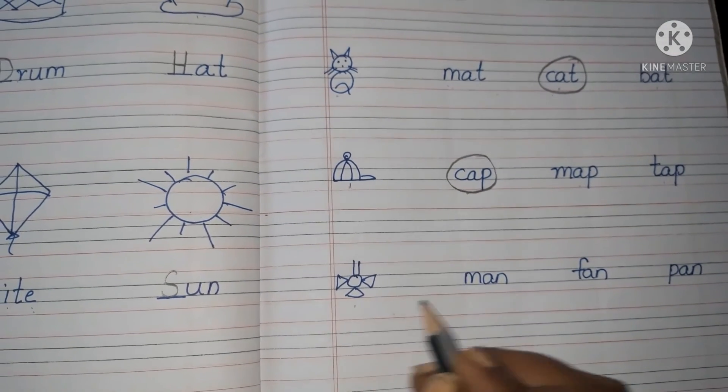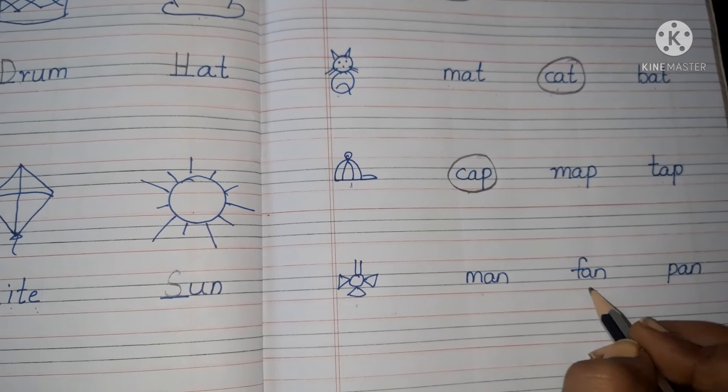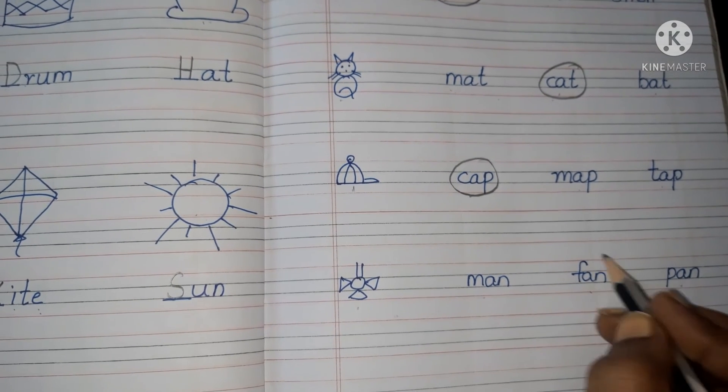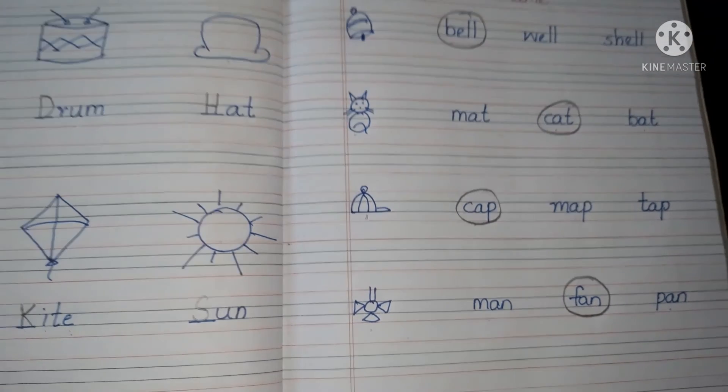Next. Fan. M-A-N man, F-A-N fan, P-A-N pan. So circle F-A-N fan. Okay, children. Like this, you have to complete these two pages, children.